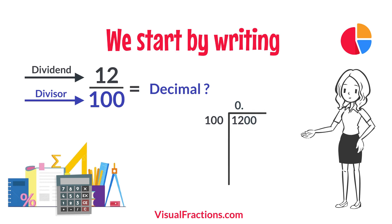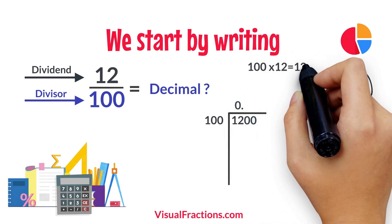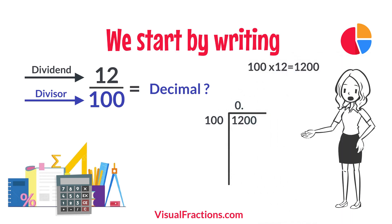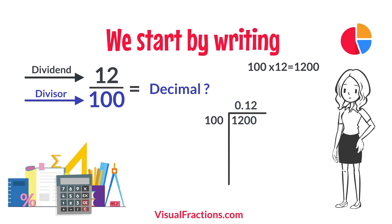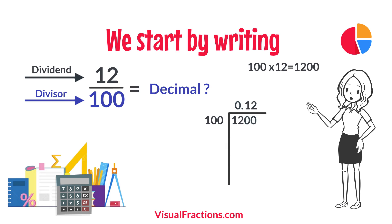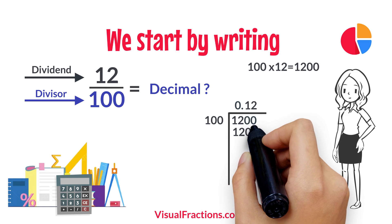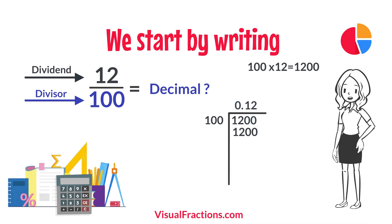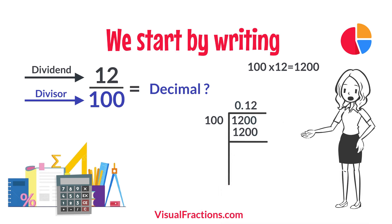How many times does 100 go into 1,200? Exactly 12 times. We write 12 after the decimal point in the quotient, making it 0.12. Multiplying 12 by 100 gives us 1,200. When we subtract 1,200 from 1,200, we get a remainder of 0.